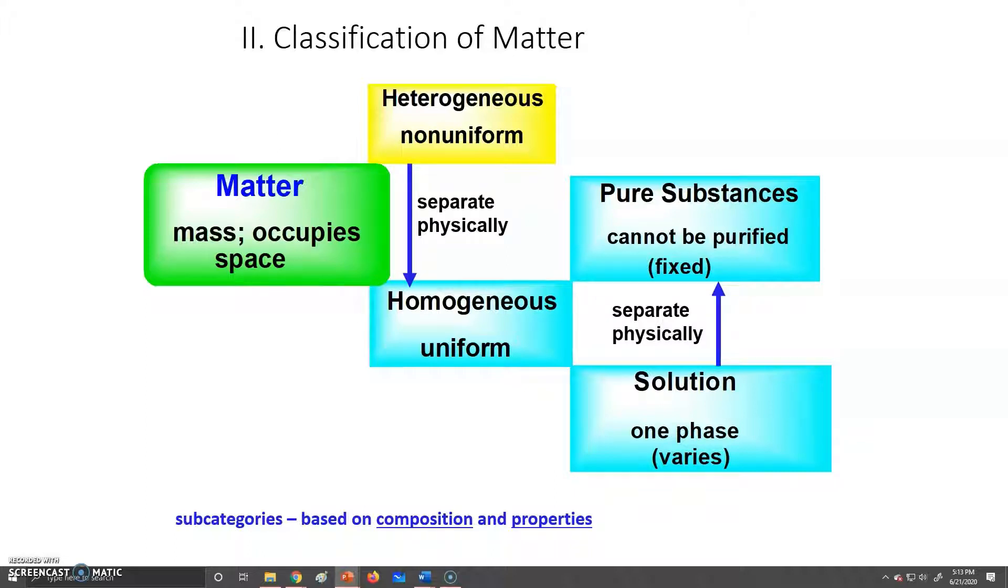We can characterize matter based on our ability to separate it. Things that we can separate physically, and by physically I just mean by hand, such as by filtering or something like that, we consider heterogeneous or non-uniform. That means it's very differently distributed.